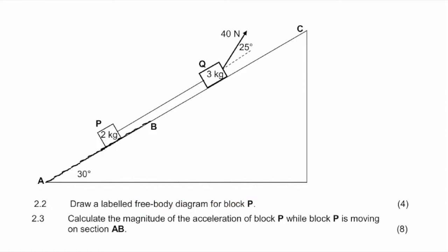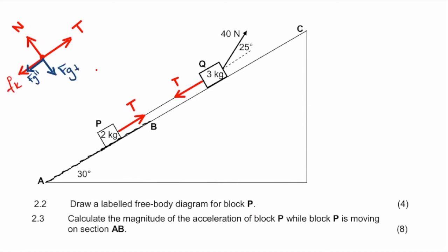Looking at P: there's the tension in the rope — remember a rope pulls both sides with exactly the same amount, so if it's pulling upward at P it's pulling downward at Q. For P, that is an upward force; for Q it would be downward. Then we also have a normal force perpendicular to the surface, a gravitational force, which we can split into parallel and perpendicular components. That was the answer for 2.2.